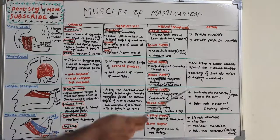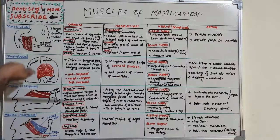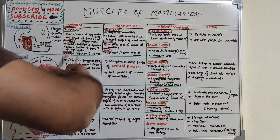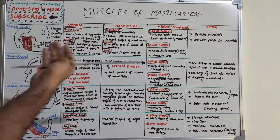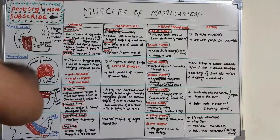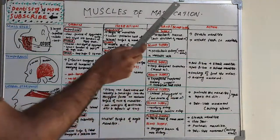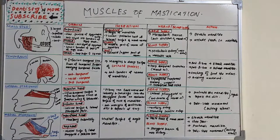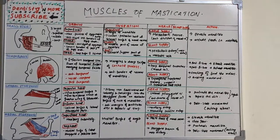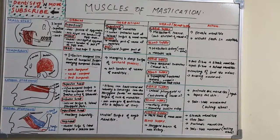The functions of temporalis: the anterior fibers elevate the mandible, and the posterior fibers retract the mandible — bringing it back to normal position after protrusion. It also helps in crushing food between molars and assists in side-to-side grinding movements.